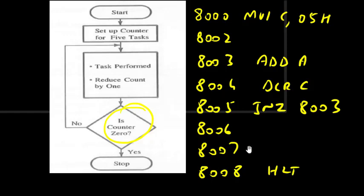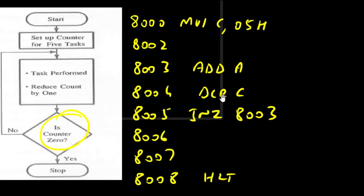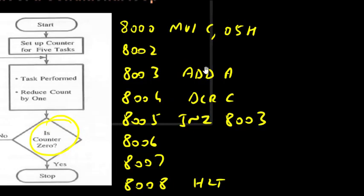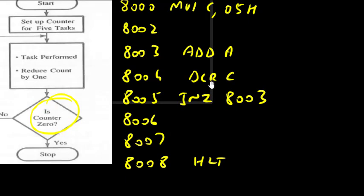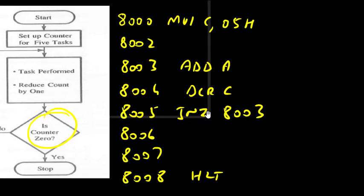MVI C, 05 sets the count. ADD A adds the contents of A with itself. DCR C decrements the count by one, and JNZ checks whether C is zero or not. As long as C is not zero, execution jumps back to 8003, adding A again and decrementing C. This continues until C becomes zero, meaning A has been added five times. This is how we use the conditional loop.